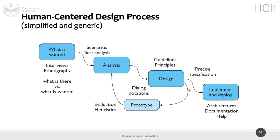The human-centered design process we are going to use in this course is simplified but generic. We will start with what is needed — more than wanted — that is need finding. Then you go to an analysis phase where you have a list of needs and need to formalize requirements. I have to build a system; I cannot use the needs directly. I have to come up with a solution that satisfies those needs. There are two ways: scenario and task analysis.